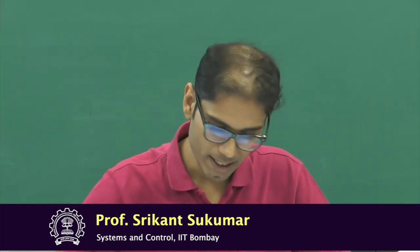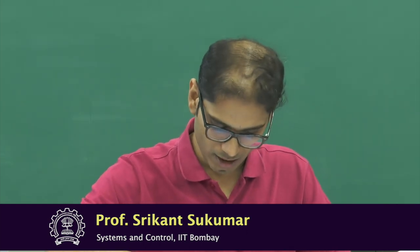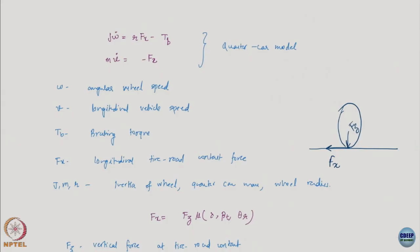We were looking at these models, and there are a couple more models we will look at. This is the anti-lock braking system model — again a very mechanical system model. Here you look at the car as a quarter car, what is called a quarter car model. These are all very standard terminology in automobile systems. You use the quarter car model to do a lot of design — suspension, braking — and you expect them to work well in the real system also.